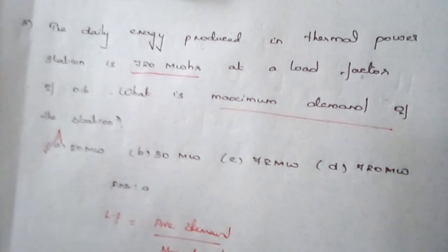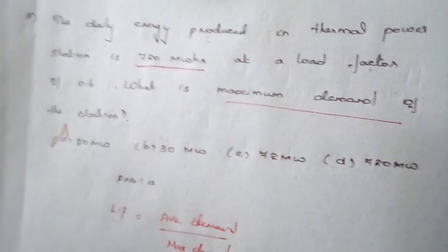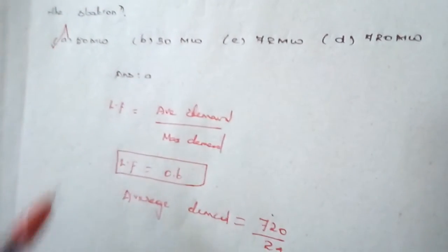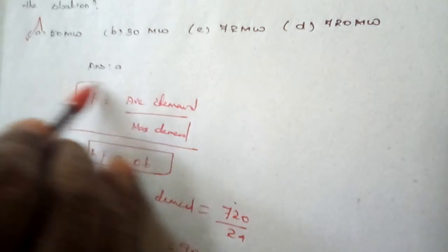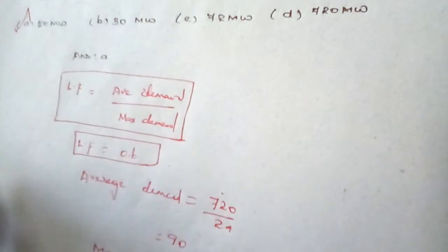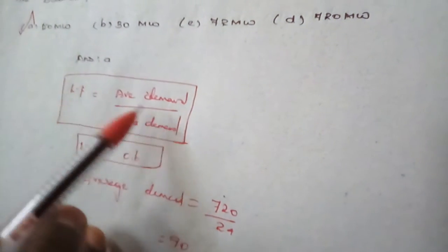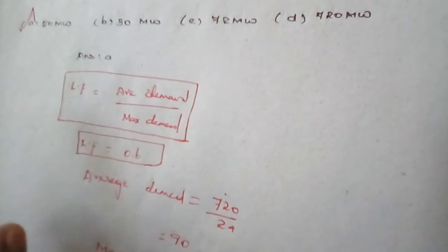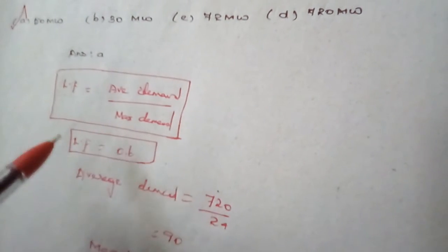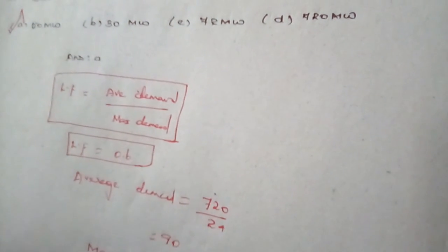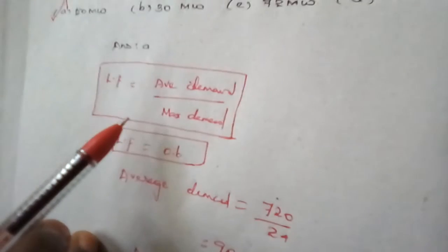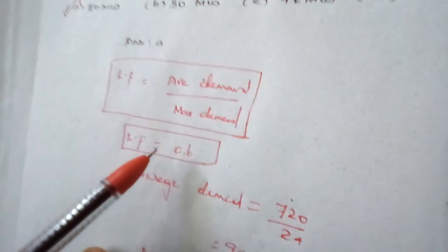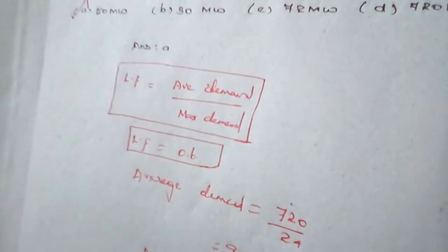This formula is very important for finding maximum demand or average demand once the load factor is known. The key formula is: load factor equals average demand divided by maximum demand. Knowing this, we can find any one of these three quantities given the other two.